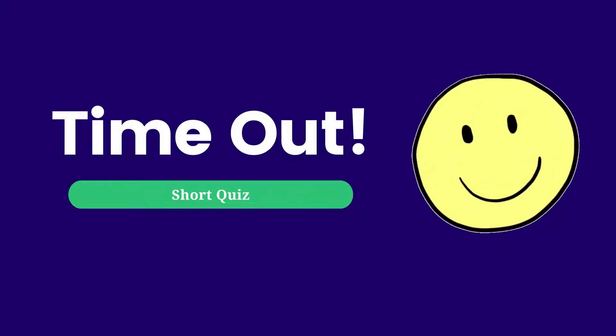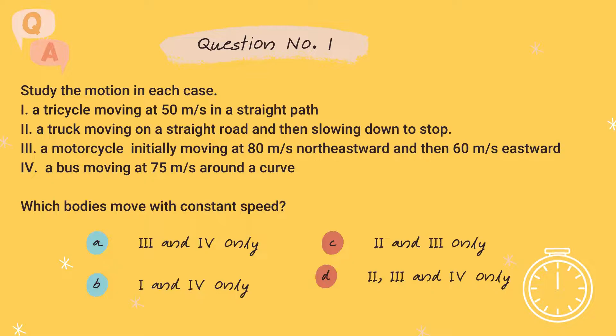Let's have a short quiz. Question number one. Study the motion in each phase. One, a tricycle moving at 50 meter per second in a straight path. Two, a truck moving on a straight road and then slowing down to stop. Three, a motorcycle initially moving at 80 meter per second northeastward and then 60 meter per second eastward. Four, a bus moving at 75 meter per second around the curve.